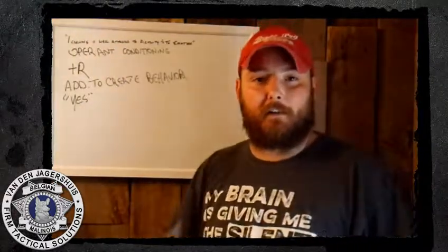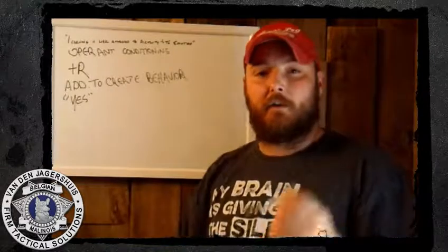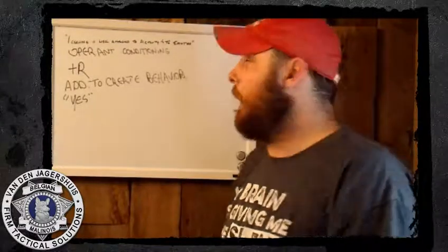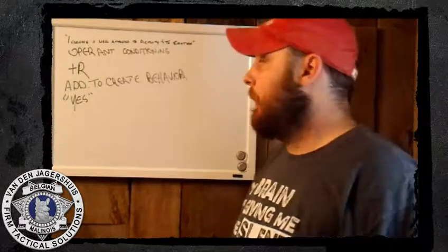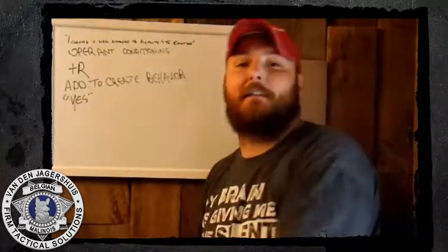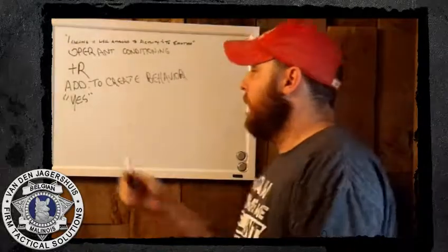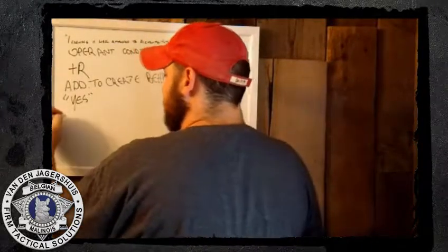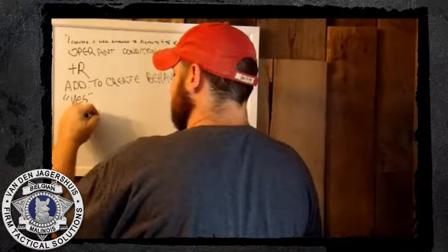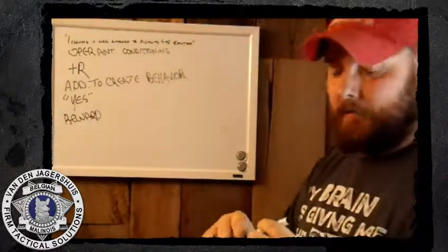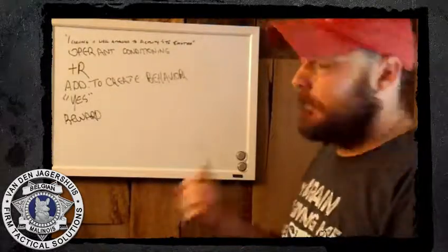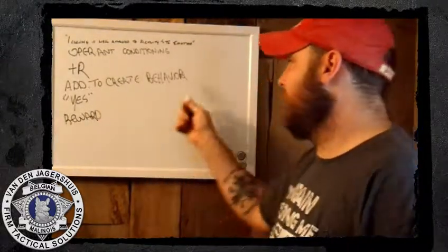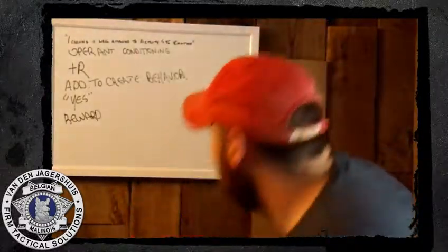We say 'sit,' the dog sits, we mark and reward with the word 'yes.' The dog has now been positively reinforced — we added the treat, the food, the toy, whatever, to create the sit behavior. It reinforces the idea that if I sit, I get that reward. So we're creating behavior with a verbal marker of 'yes.' This is reward-based, and you often think of clicker training, which is what verbal training is to an extent.